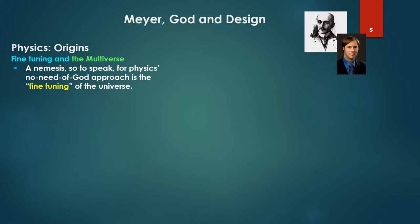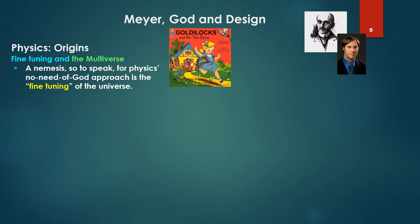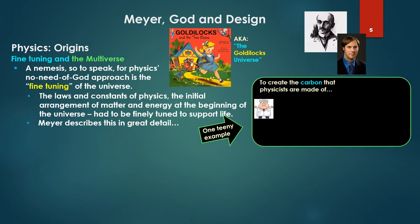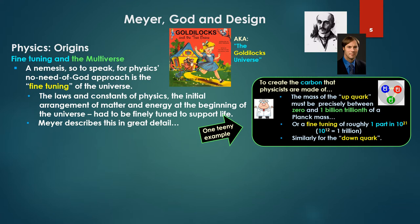The origins of the universe—a nemesis for physics' 'no need of God' approach—is the fine-tuning problem, also known as the Goldilocks universe. Everything just fits perfectly. The laws and constants of physics, the initial arrangement of matter and energy at the beginning of the universe, had to be finely tuned to support life. Meyer describes this in great detail. One tiny example: to create the carbon that physicists are made of, the mass of the up quark must be precisely between zero and one billion trillionth of a Planck mass—a fine-tuning of roughly one part in 10 to the 21st. We're just noting 10 to the 12th is one trillion, so one in lots and lots of trillions. Similarly for the down quark—tremendously fine tuning.